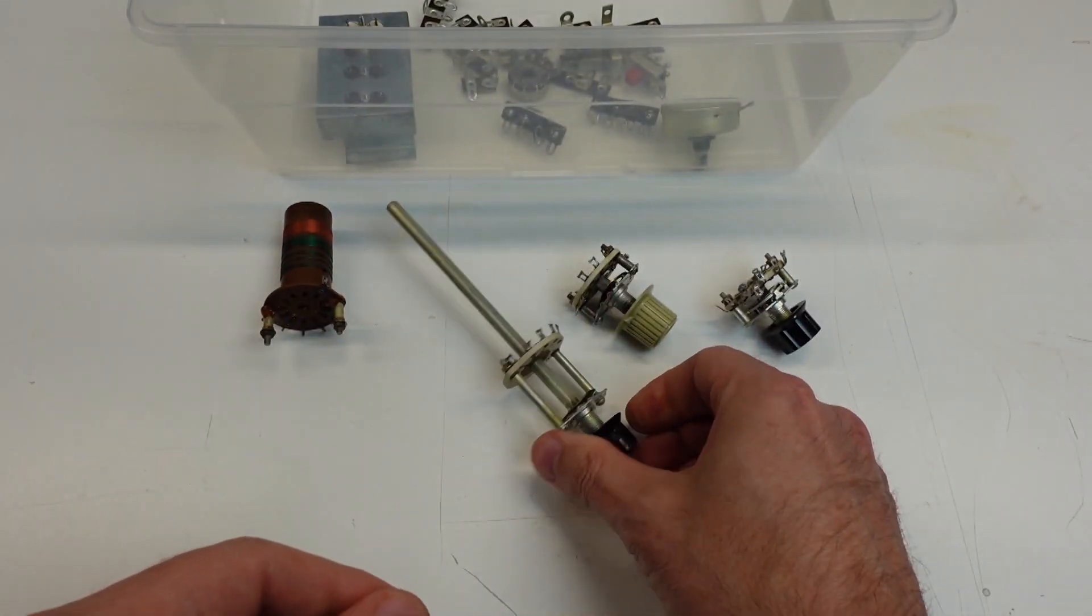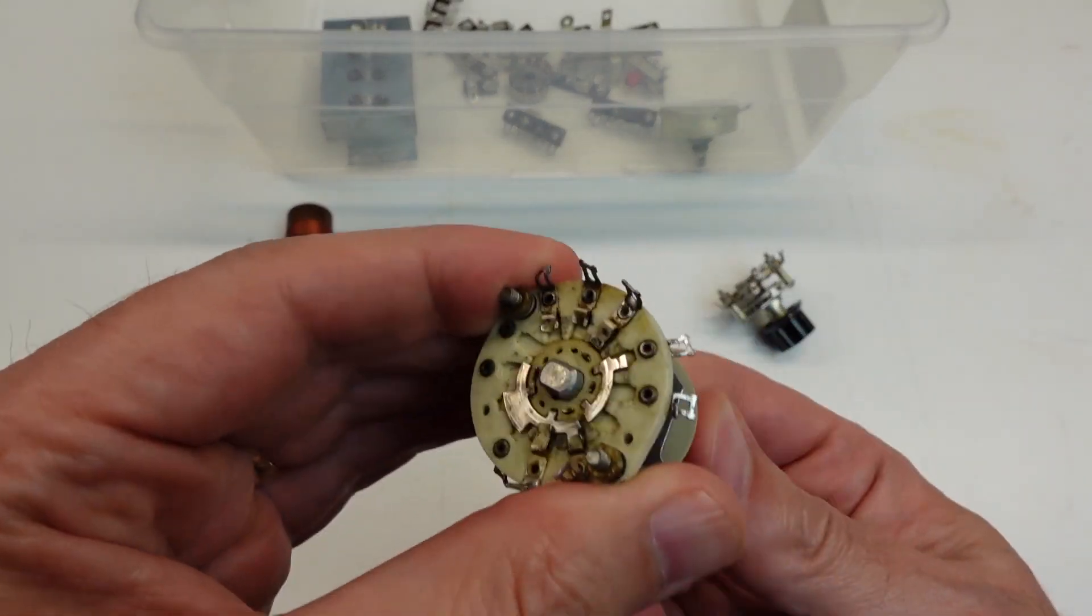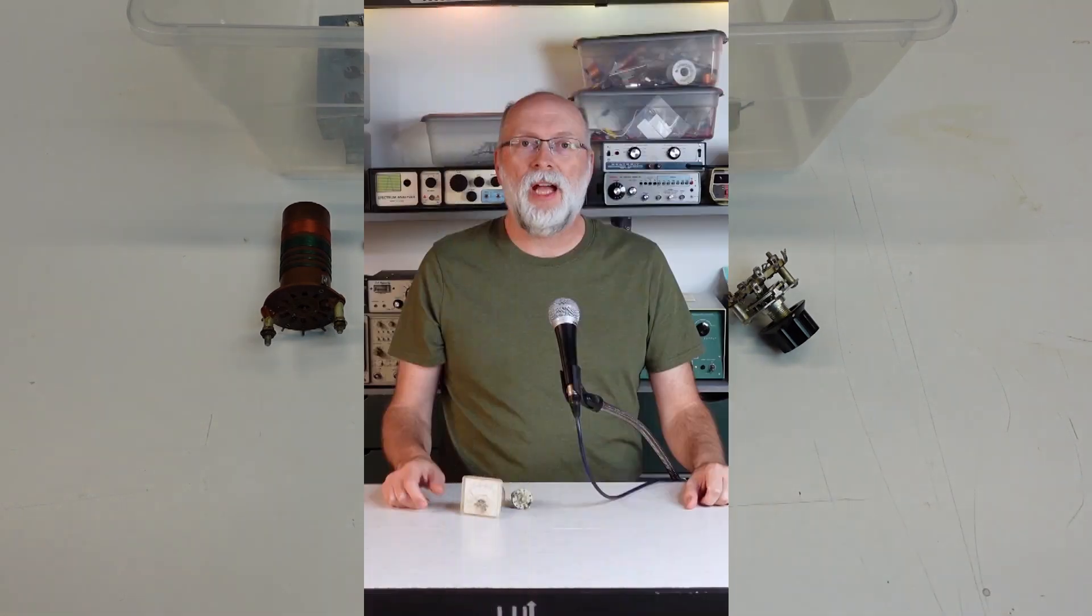And as I said earlier, I can work around the bad contacts on the function switch. So it looks like I've got all three rotary switches on this DX60 ready to return to service. I've also made good progress on a lot of the other mechanical problems on this project. And I've ordered all of the replacement parts that I think I'm going to need to fully restore it. So that'll be the subject for the next episode.